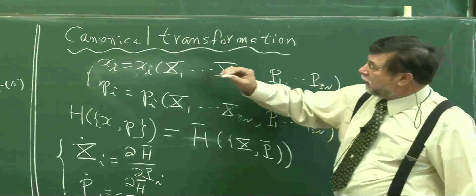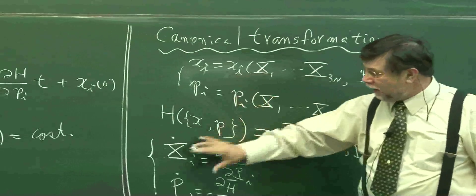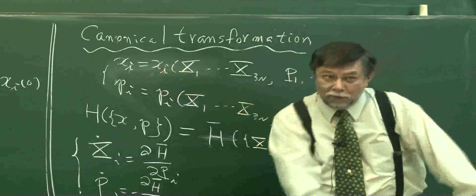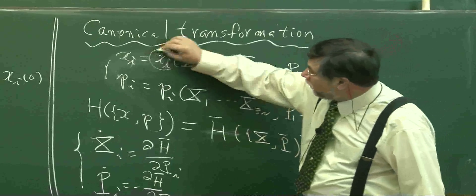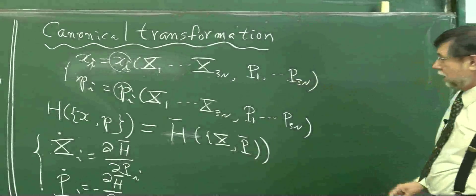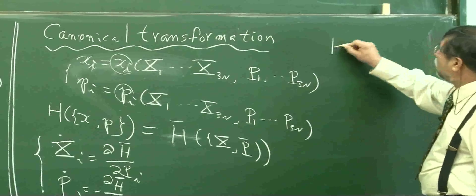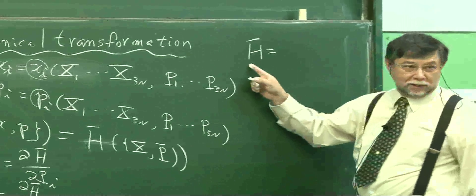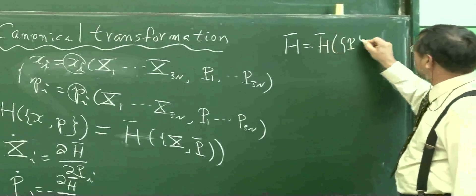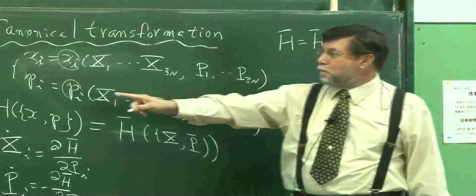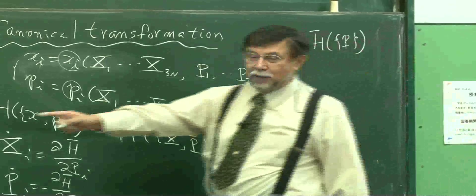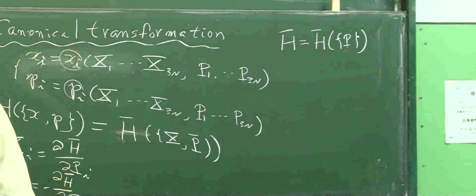In general, there are infinitely many combinations of this. That is the general case. But suppose you carefully choose this set function in such a way that the new Hamiltonian is only a function of new momentum. Then, applying this, you can solve it.